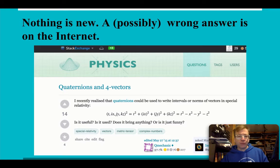So, no idea is new. If you come up with one, you really should look on the internet for it. When I came up with this idea in the spring of 2015, I found this on Physics Stack Exchange. This person, Isaac, wrote: I recently realized that quaternions could be used to write intervals or norms of vectors in special relativity. Is this useful? Is it used? Does it bring anything? Or is it just funny?